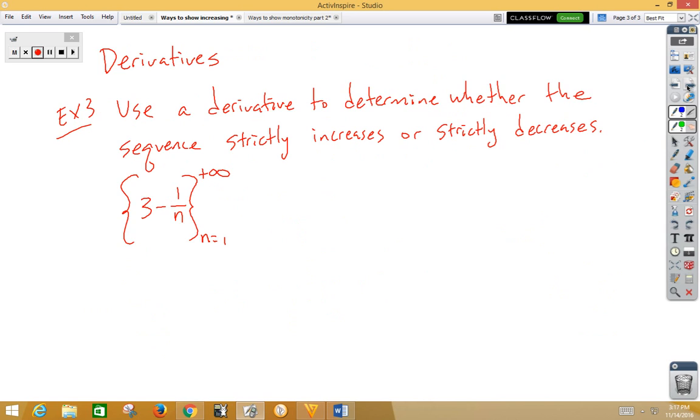Let's learn our third trick, which is using derivatives to help us do increasing or decreasing. So here we have a sub n. And I'm going to think of that as 3 minus 1 n to the negative 1 for derivative purposes.